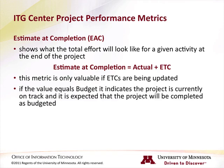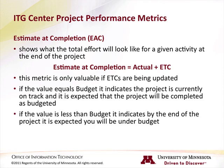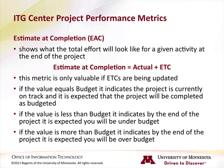If the value for EAC is equal to the value for budget, it indicates that the project is currently on track and it is expected that the project will be completed as budgeted. If the value is less than budget, it indicates that by the end of the project it is expected you will be under budget. If the value is more than budget, it indicates that by the end of the project it is expected you will be over budget.